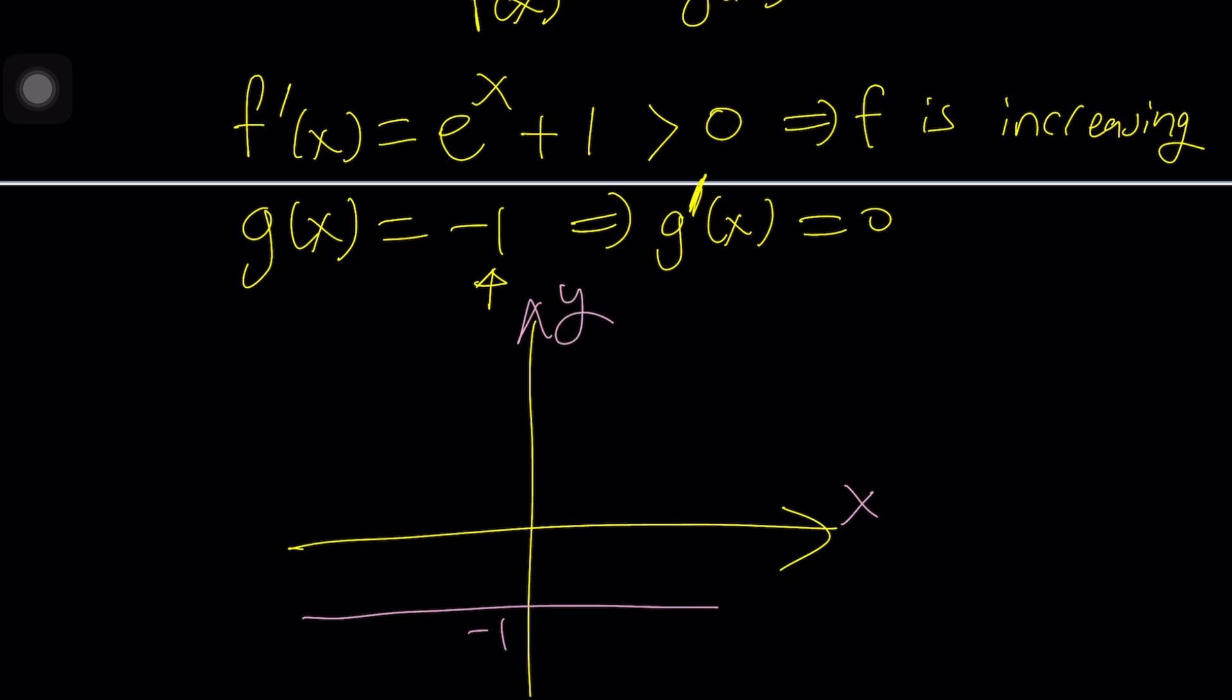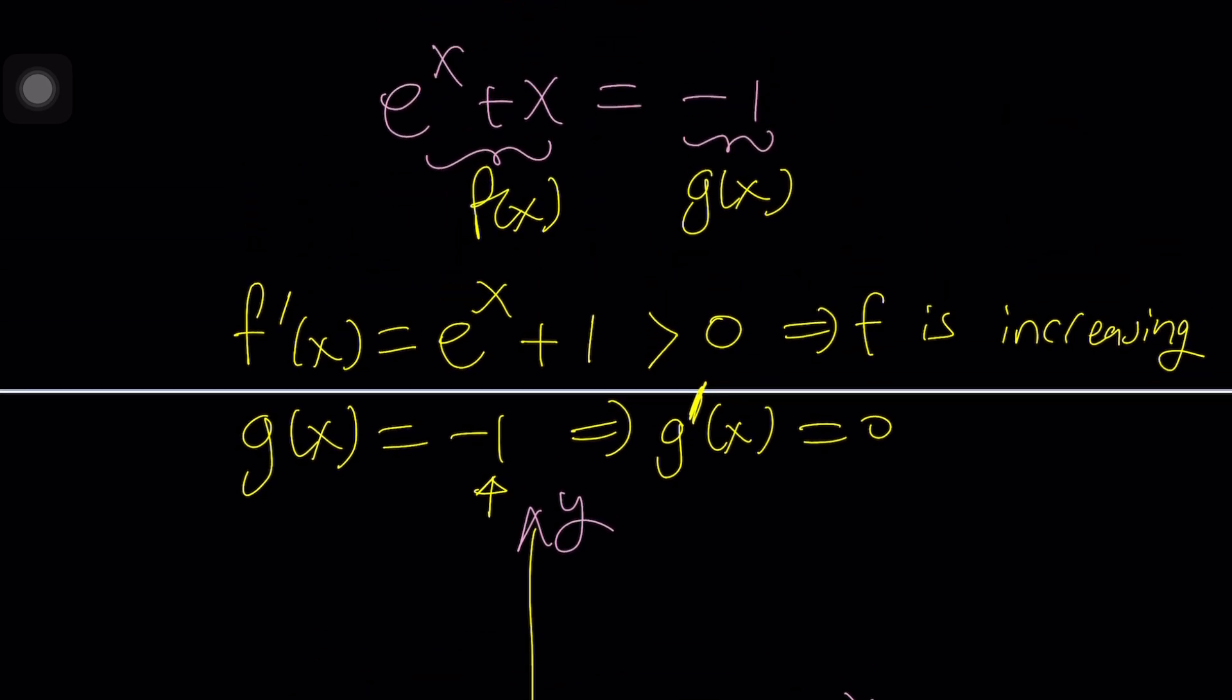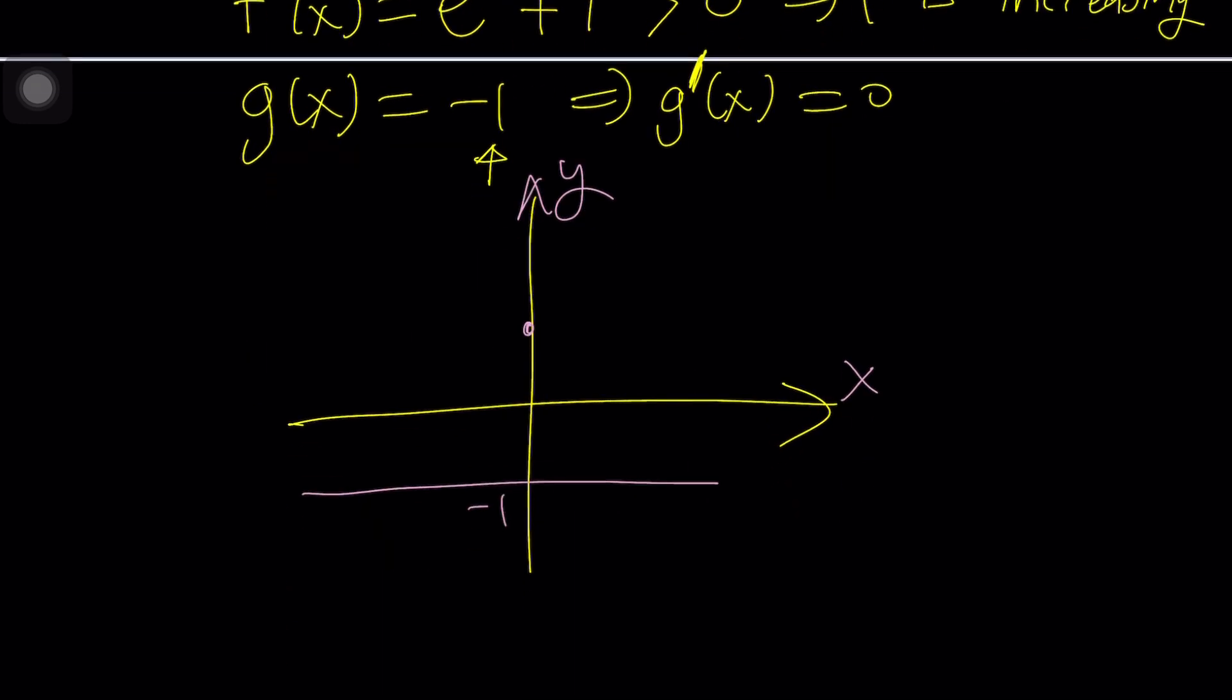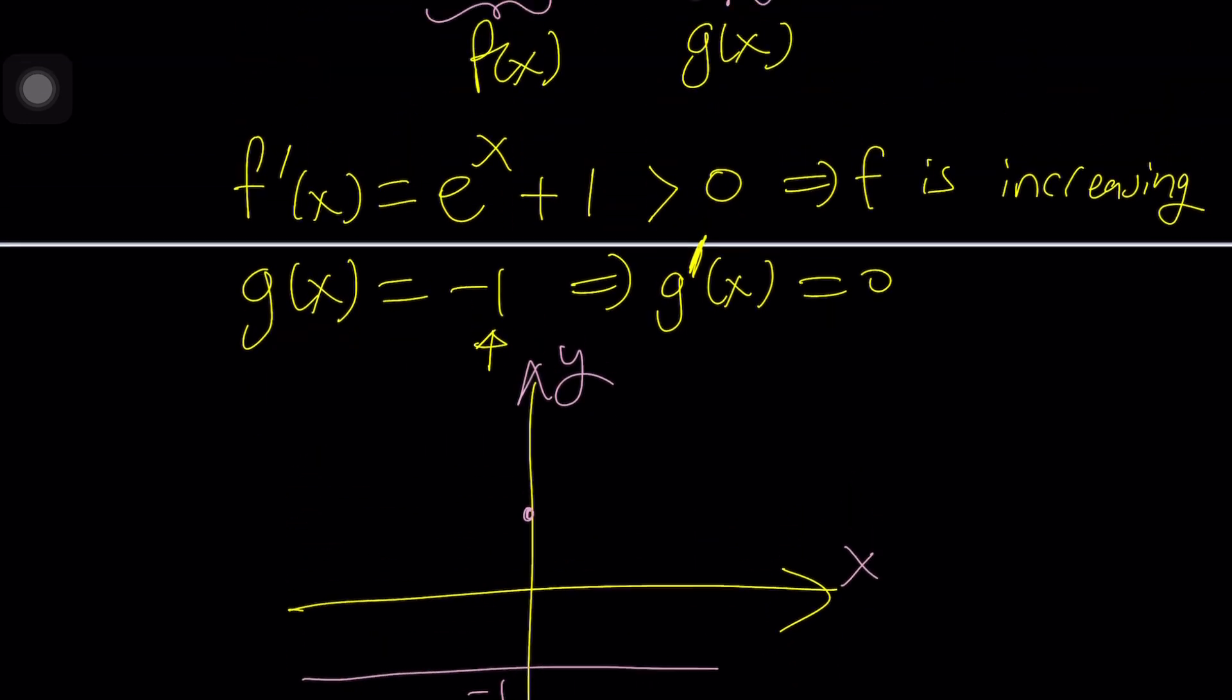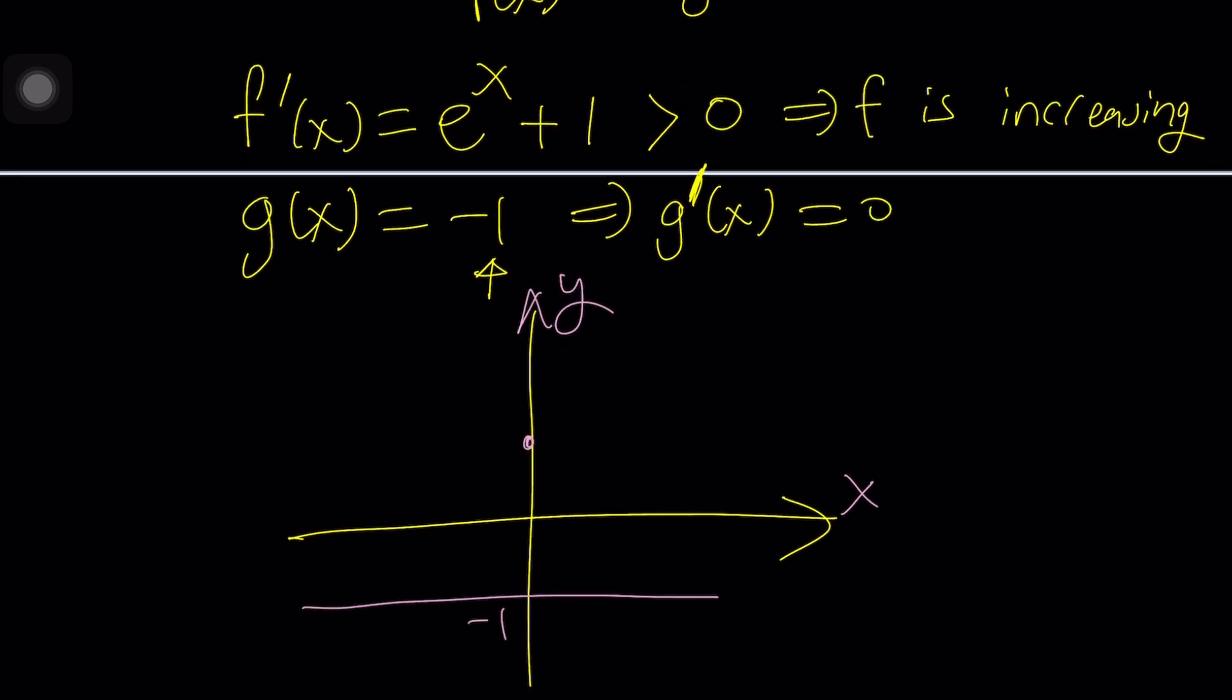What about the other function? Well, if you think about it, like if you replace X with 0, you're going to get 1. So at 0, it's going to go through 1. As X approaches negative infinity, you know, E to the X is going to approach 0. X is going to approach negative infinity. So it's probably going to go down like this.